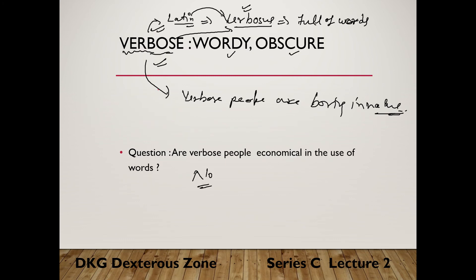Let's start one by one. First one is verbose. The Latin word related to it is 'verbosus' — V-E-R-B-O-S-U-S — which basically means 'full of words', that is, a person who uses so many words.